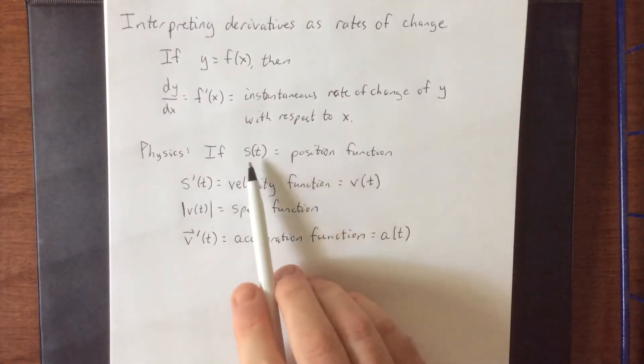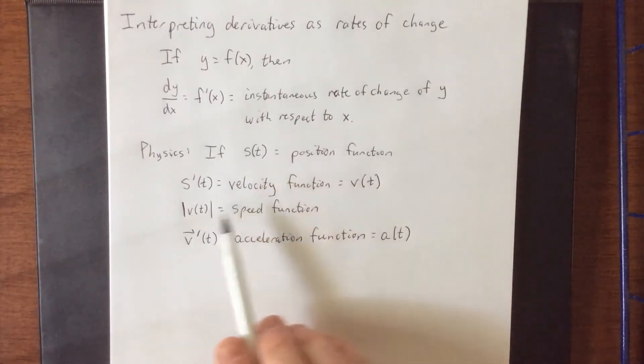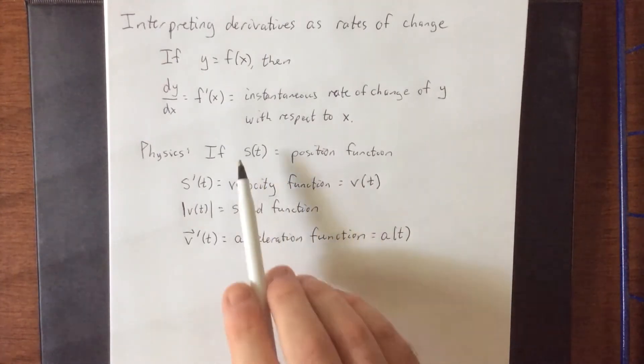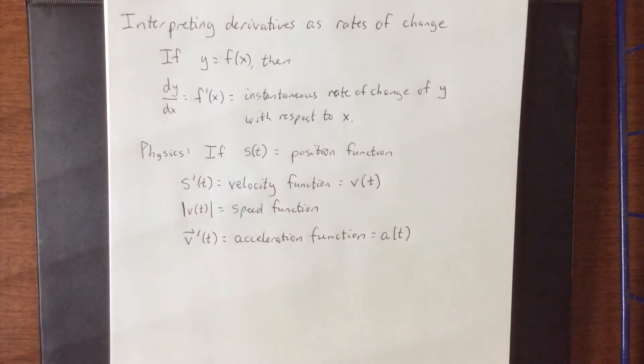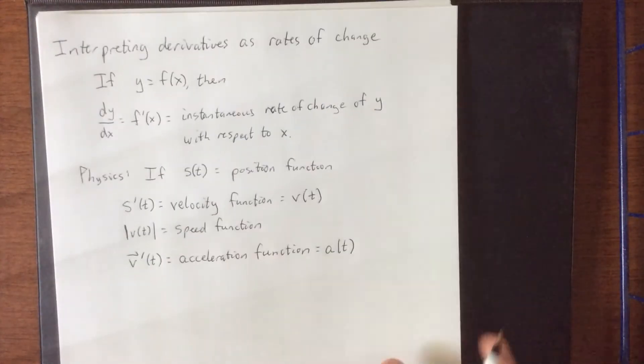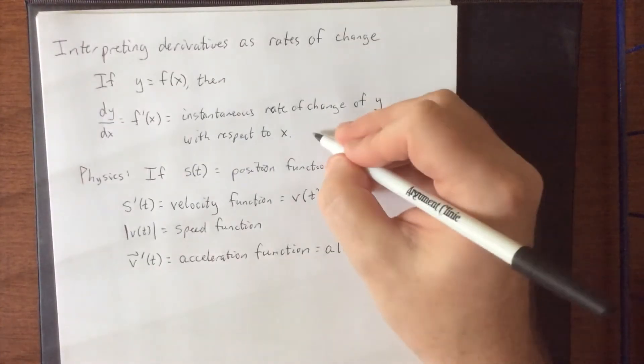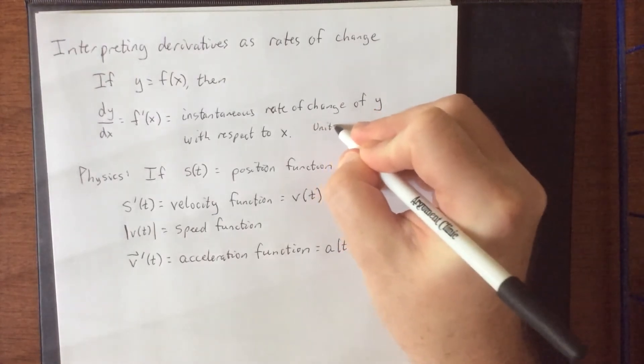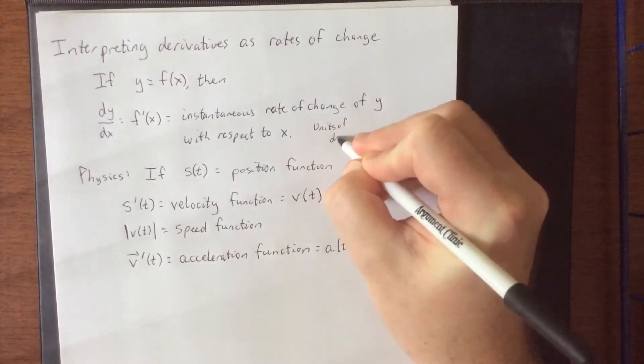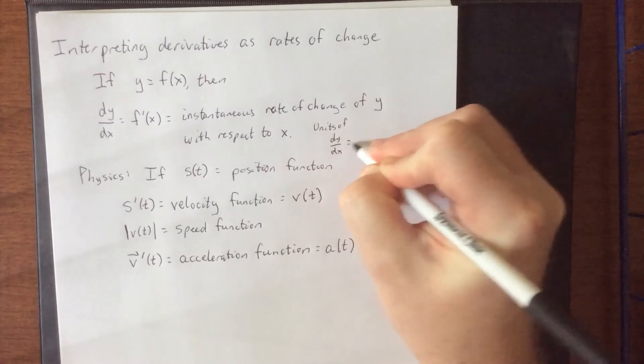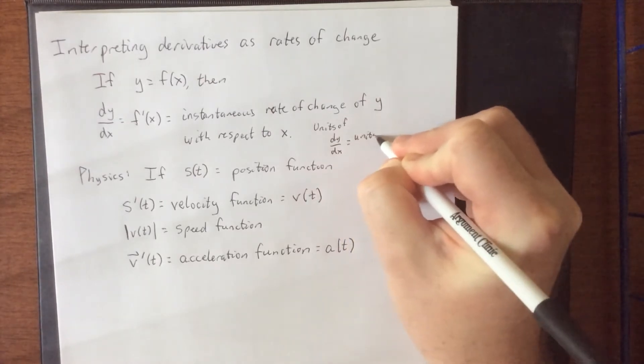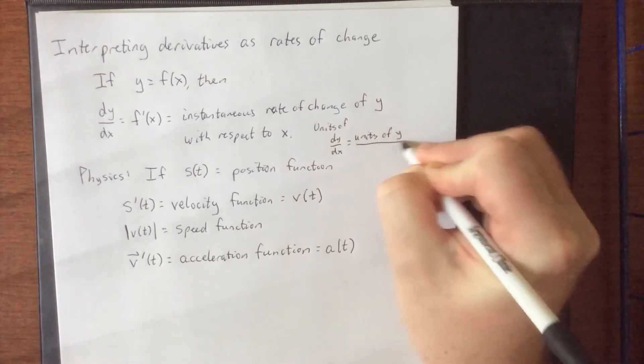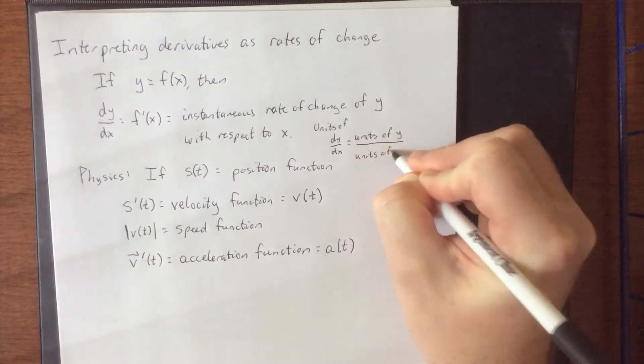Now, whatever units you started with in terms of s and t, the velocity will have units of the units of s divided by the units of t. In fact, that's worth saying back up here. The units of dy over dx are going to be the units of y over the units of x.